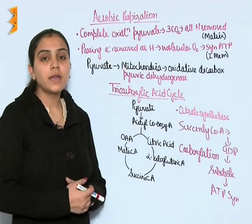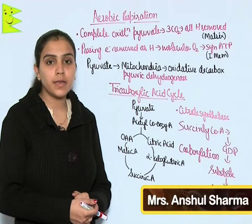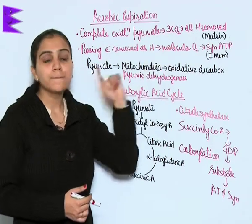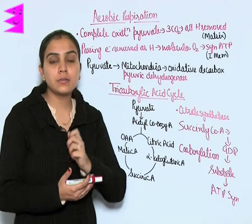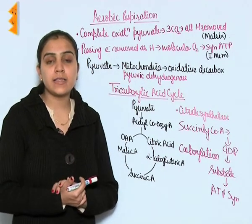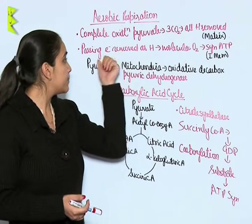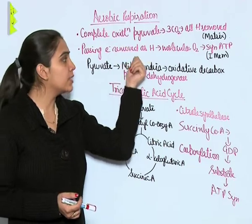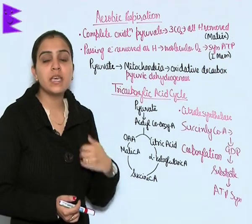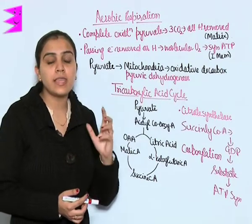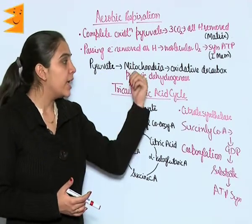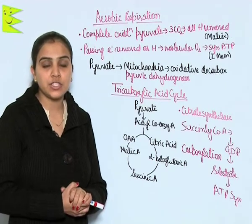Aerobic respiration occurs in two steps and takes place in mitochondria. The first step involves complete oxidation of pyruvate — removal of all the hydrogen — and this completely oxidized pyruvate gives three carbon dioxide. This step takes place in the matrix of mitochondria. The next step is passing the removed electrons as hydrogen to molecular oxygen so that ATP is synthesized, and this step occurs in the inner membrane of the mitochondria.